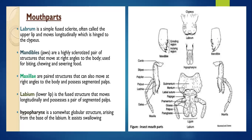In this picture, mouthparts are divided into different parts. The labrum is a simple fused sclerite often known as the upper lip. It moves longitudinally and is hinged to the clypeus. This is the upper lip of an insect, which is called the labrum.